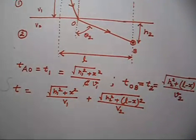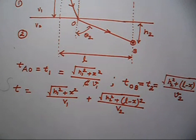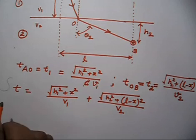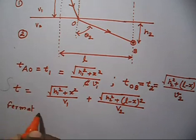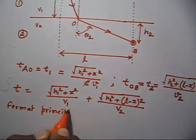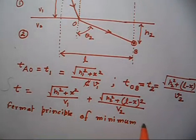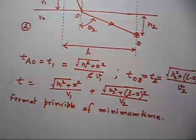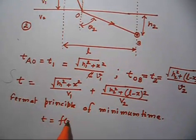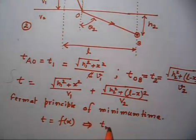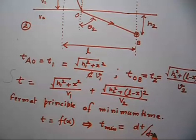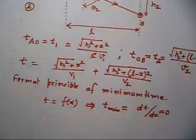The problem asks us to prove Snell's law using dT/dX = 0. Applying Fermat's principle of minimum time: light chooses a path that requires minimum time. Here, X is the variable, and time is a function of X. So the condition for minimum time is dT/dX = 0.